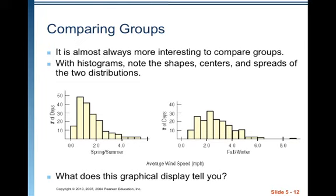It is almost always more interesting to compare groups with histograms in terms of the shapes, centers, and spreads of the two distributions. So, what does this graphical display tell you? We've got spring and summer, fall and winter. In spring and summer, the middle of the distribution is much closer to 0, whereas for fall and winter, it's a little bit bigger than 2. Both tend to be skewed somewhat to the right.